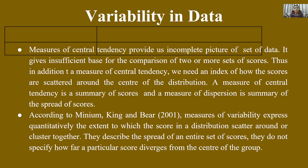According to Minium, King and Bear in 2001, measures of variability express quantitatively the extent to which the scores in a distribution scatter around or cluster together. They describe the spread of an entire set of scores. They do not specify how far a particular score diverges from the center of the group.